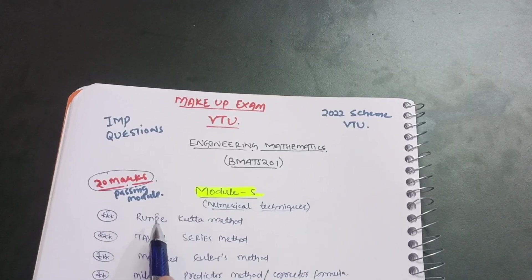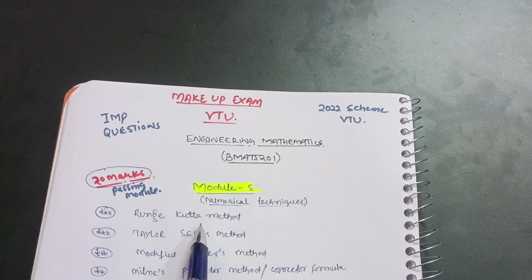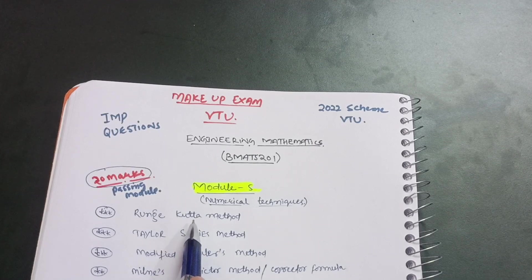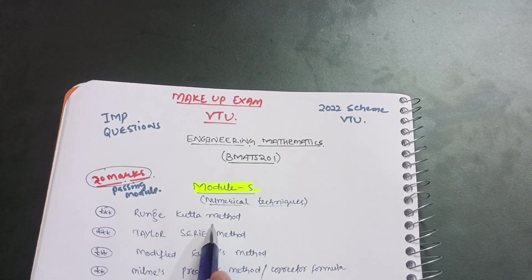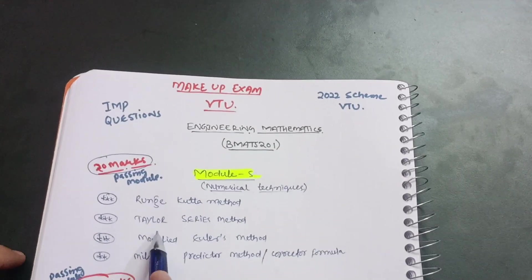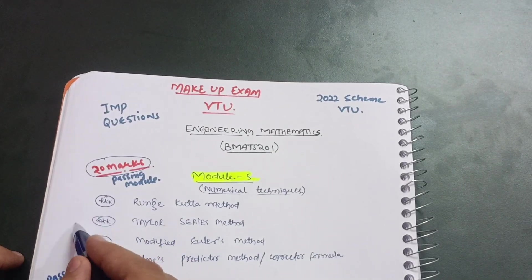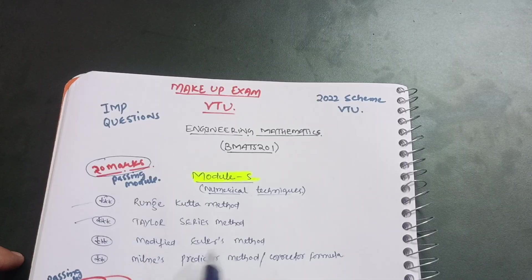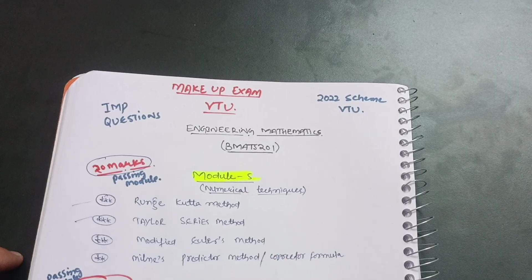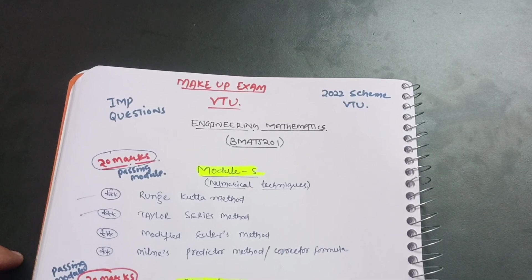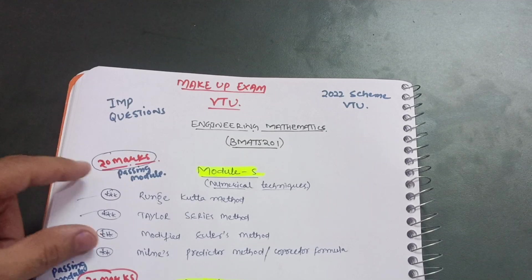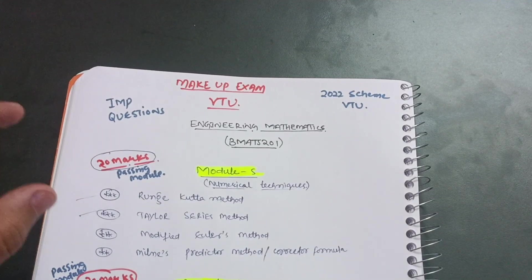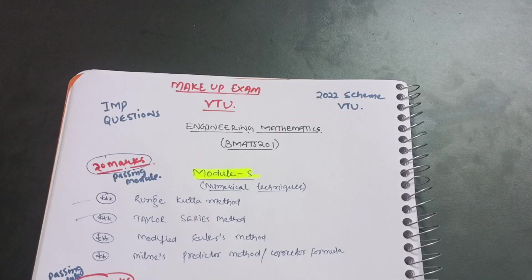The Runge-Kutta method is the simpler one. I have uploaded a video on it and will provide the link in the description box. Next is the Taylor series method, which is the most important and easier one, then Modified Euler's method and Milne's predictor-corrector formula. Links for all these methods will be in the description box so you can learn how to solve questions and easily get 20 marks in Module 5.